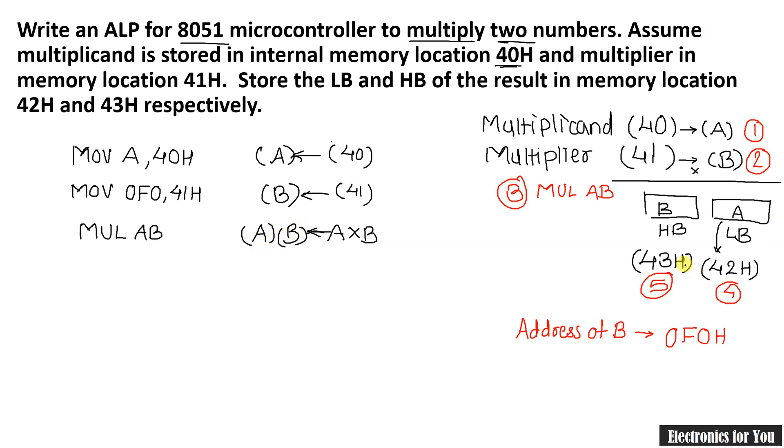Now as lower byte is stored at accumulator, we will use again MOV instruction. MOV 42H, A. We have to move data to 42H. Therefore, in every MOV instruction at left hand side, we are having destination. So 42H, A will be there. That is the content of accumulator is moved into the 42H. That is already the lower byte. It is a lower byte which is copied into 42H. So one task is completed.